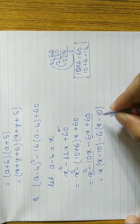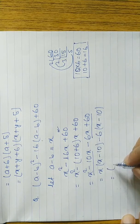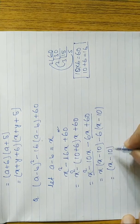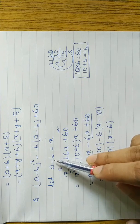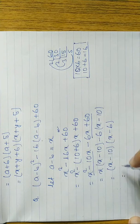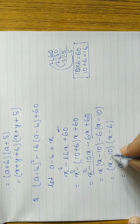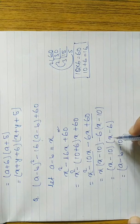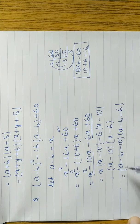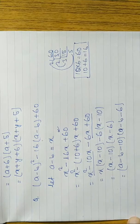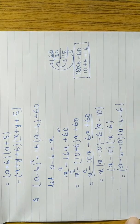Now (x - 10) and (x - 10) are the same, so we take (x - 10) common and remaining is (x - 6). Now substituting back, x = a - b: the answer is (a - b - 10)(a - b - 6). These are unlike terms so we cannot add or subtract further.